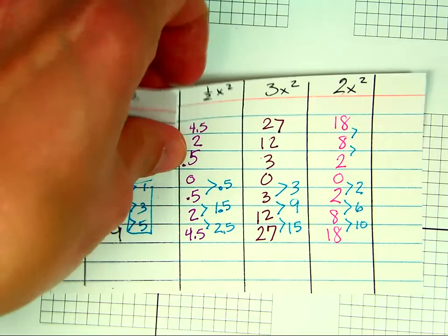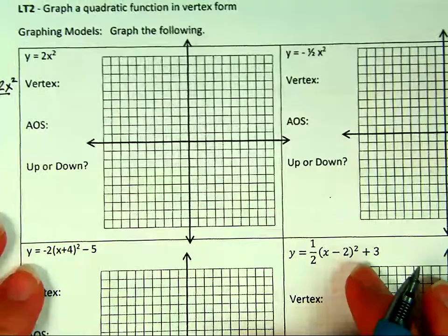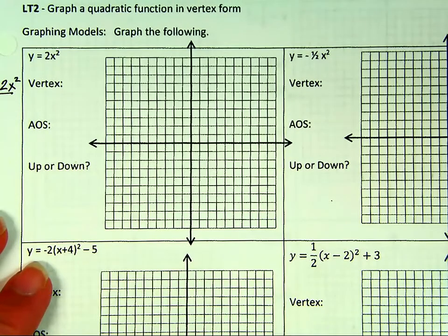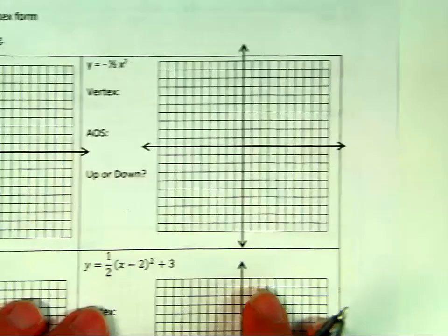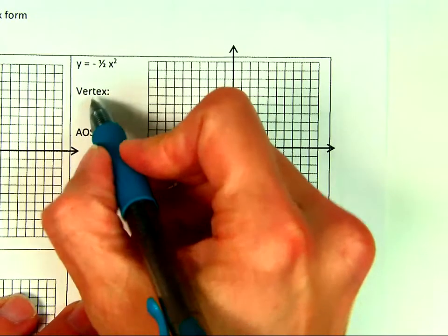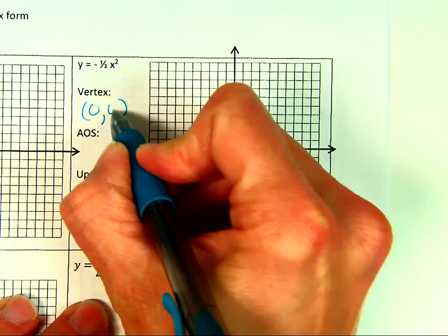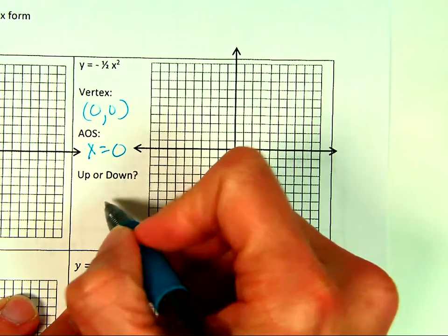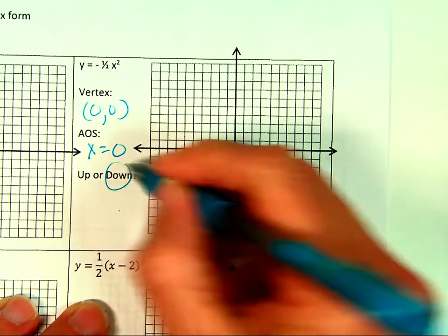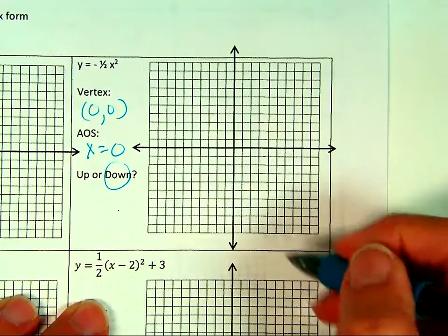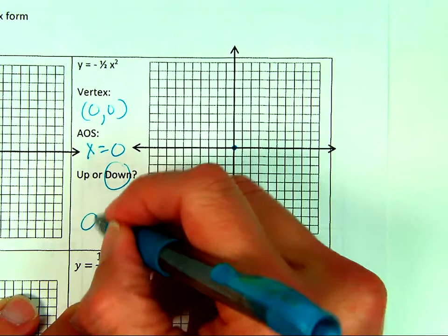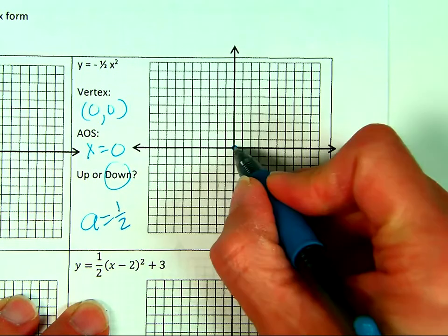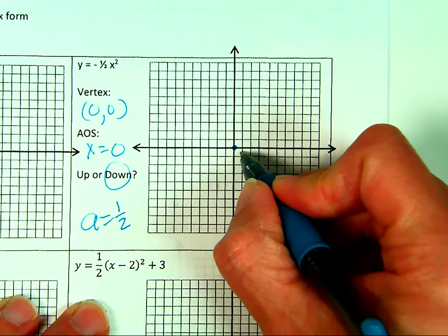With that in mind, let's graph some and then write some equations. Let's try negative one half. The vertex is (0,0), axis of symmetry is x = 0, and it opens down. Because A is one half, instead of going over 1 and down 1, we go over 1 and down one half on both sides.